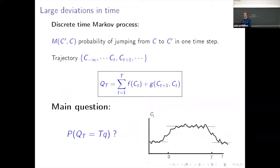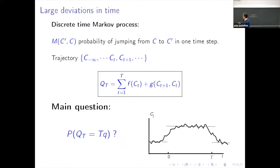So let's talk first about large deviations. Imagine that you have some Markov process specified by some matrix. It's a finite set of possible configurations, and you take a discrete time Markov process, given by a matrix which says with what probability the system will jump from one configuration C to a configuration C prime. You follow the configuration as a function of discrete time, and then you can be interested in what you call an empirical function or empirical measure — a function Qt.